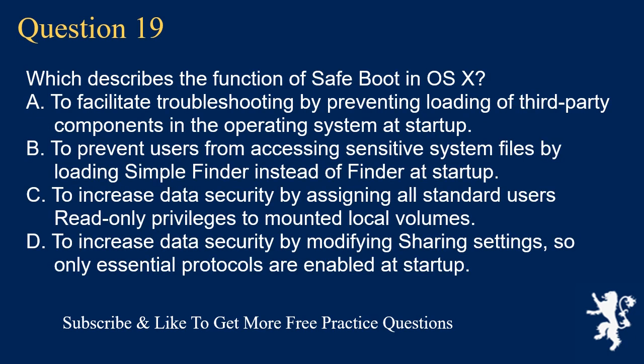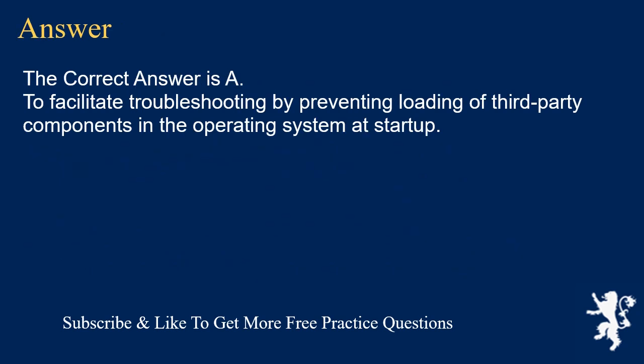Question 19. Which describes the function of safe boot in OSX? A. To facilitate troubleshooting by preventing loading of third-party components in the operating system at startup. B. To prevent users from accessing sensitive system files by loading simple Finder instead of Finder at startup. C. To increase data security by assigning all standard users read-only privileges to mounted local volumes. D. To increase data security by modifying sharing settings so only essential protocols are enabled at startup. The correct answer is A: To facilitate troubleshooting by preventing loading of third-party components in the operating system at startup.